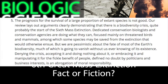Outcome five: "The prognosis for the survival of a large proportion of extant species is not good. Our reviews lay out arguments clearly demonstrating that there is a biodiversity crisis, quite probably the start of the sixth mass extinction. Dedicated conservation biologists and conservation agencies are doing what they can, focused mainly on threatened birds and mammals, among which some species may be saved from the extinction that would otherwise ensue. But we are pessimistic about the fate of most of the Earth's biodiversity, much of which is going to vanish without us ever knowing of its existence. Denying the crisis, accepting it and doing nothing about it, or embracing it and manipulating it for the fickle benefit of people, defined no doubt by politicians and business interests, is an abrogation of moral responsibility." Unquote.